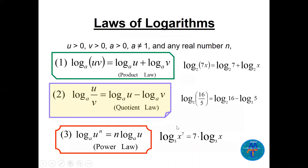We have the change of base formula. We see the laws all together in one slide. There are conditions we have to take care of: u is positive, v is positive, a is positive, a cannot be one. If we have log base a of uv — remember this is a multiplication — it will be log base a of u plus log base a of v. We call this the product law. Inside the argument we have a product, so for example 7x becomes log base 2 of 7 plus log base 2 of x.